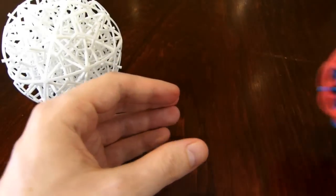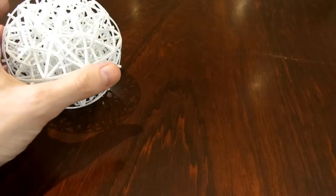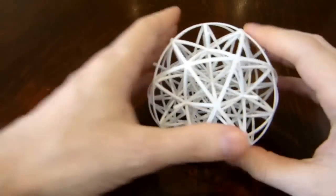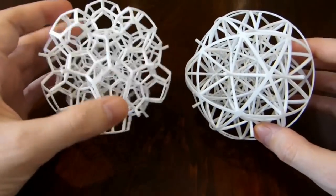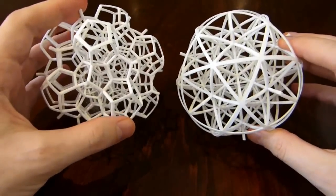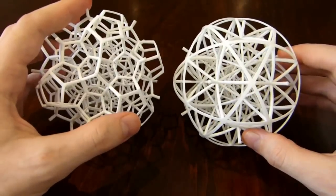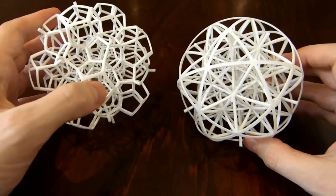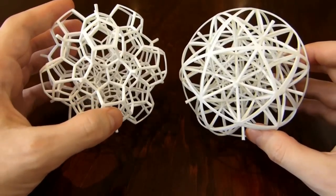And so it turns out that the 120 cell and the 600 cell, here we are, it's the 120 cell and the 600 cell or rather half of each of them. So these are dual to each other, that if you do the duality operation to the 120 cell you get the 600 cell and vice versa.